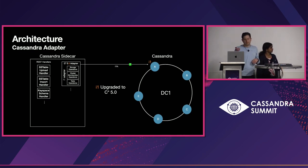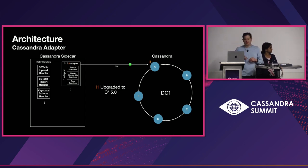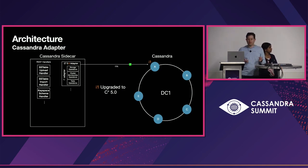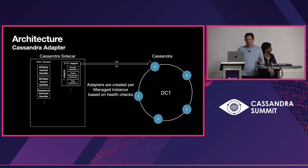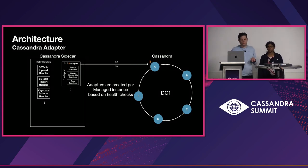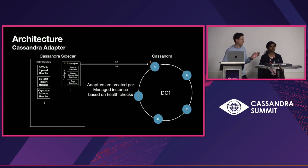Because we have these interfaces that are transparent to the handlers, we are still going to be able to serve requests. We establish the JMX connection, and that's how adapters are created and managed per Cassandra instance based on the health checks.